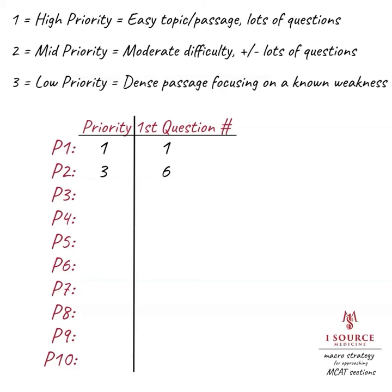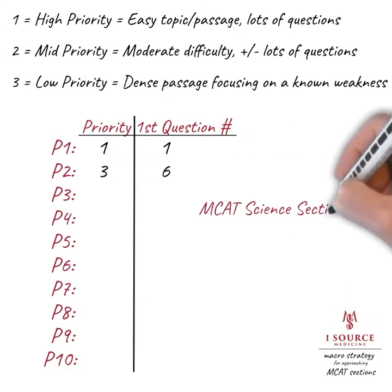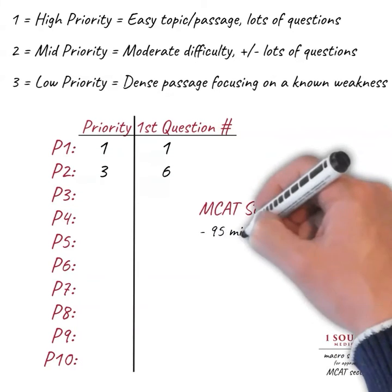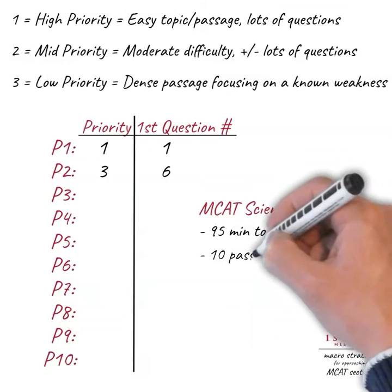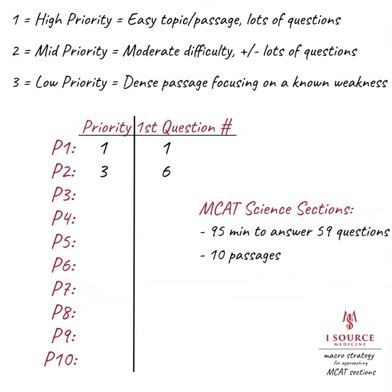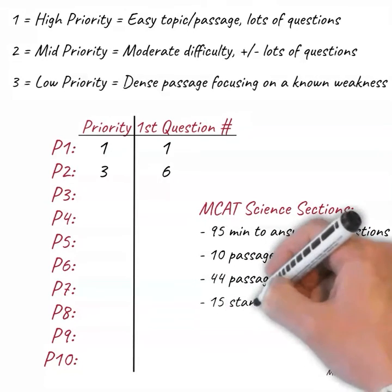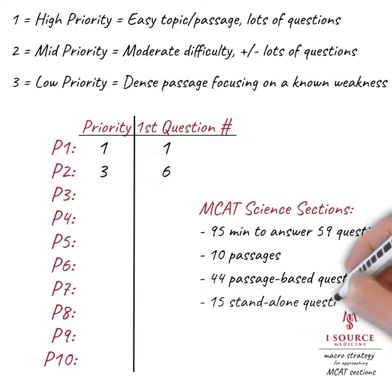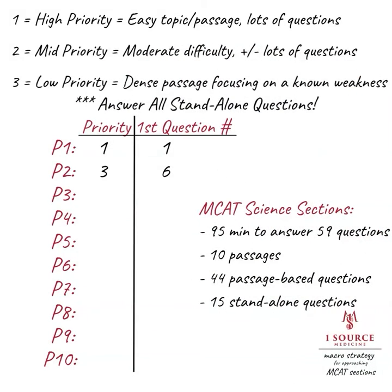Now let's imagine that once we finish ranking passage number 2, we hit Next and encounter a standalone question. There are 15 of these interspersed throughout the 10 passages on the science sections of the MCAT, so we're going to run into them with some degree of regularity. Rather than ranking or clicking past these, we're simply going to answer them as we see them. Standalone questions tend to be easier as they are more straightforward and require less consideration of novelty than those attached to notoriously dense MCAT passages.